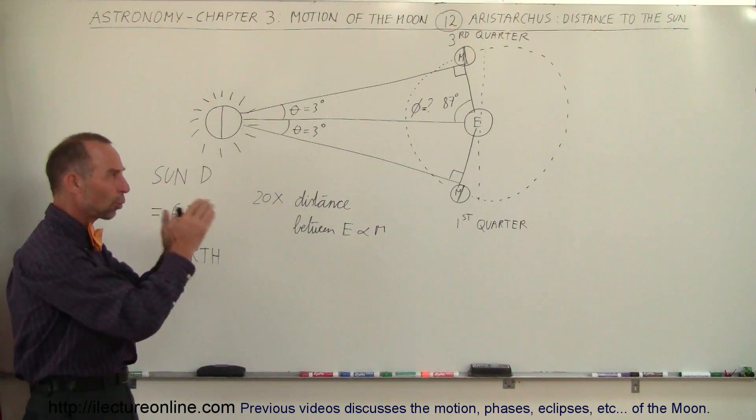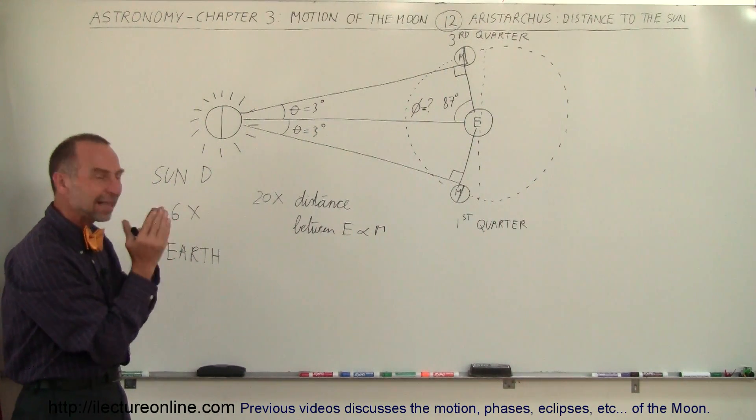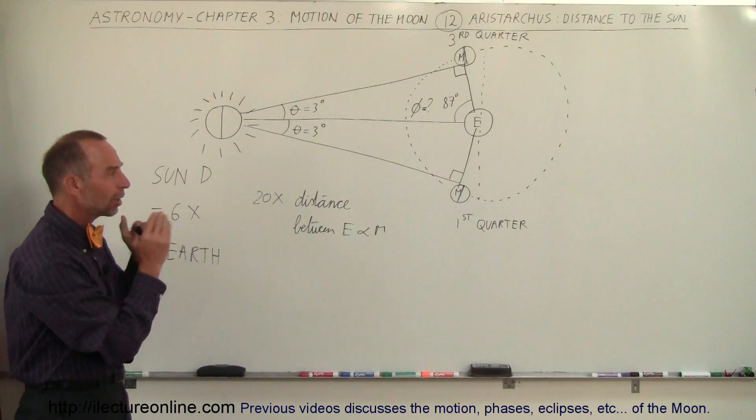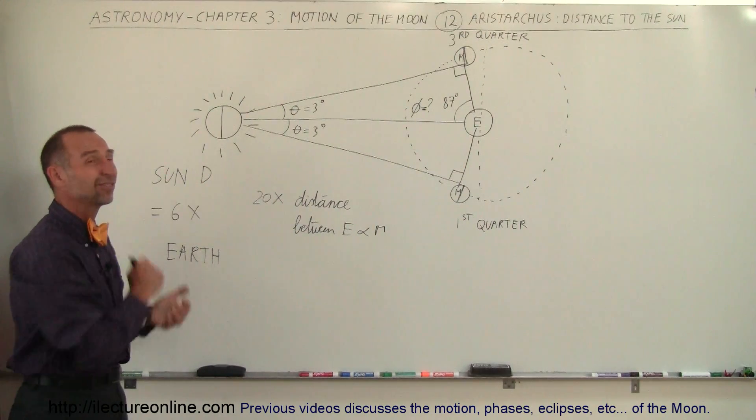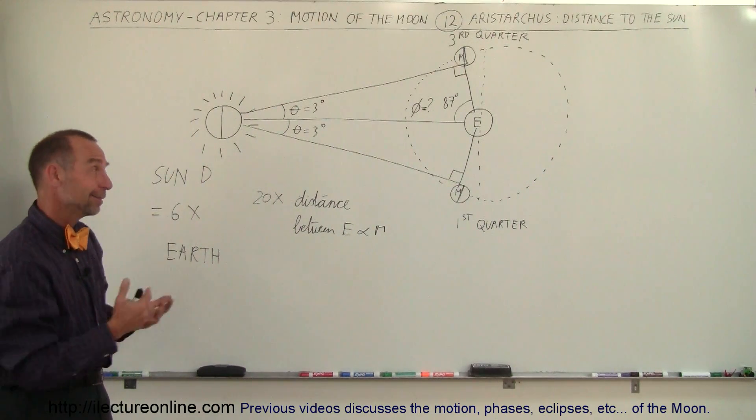We have a crescent moon, a gibbous moon, a quarter moon. Based upon when that occurred in the orbit and what it looked like, he was able to figure out the distance to the sun. Even if it was inaccurate, a tremendous accomplishment.